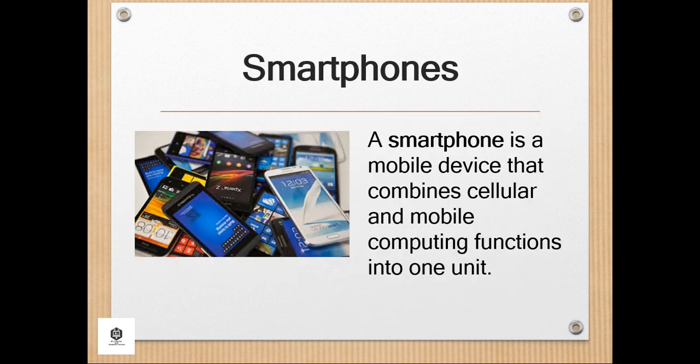Next is the smartphone. A smartphone is a mobile device that combines cellular and mobile computing functions into one unit. They are distinguished from feature phones by their stronger hardware capabilities and extensive mobile operating systems, which facilitate wider software and internet, including web browsing over mobile broadband, and multimedia functionality, including music, video cameras, and gaming, alongside core phone functions such as voice calls and text messaging.